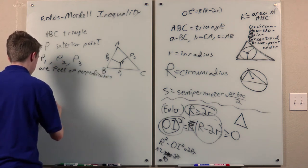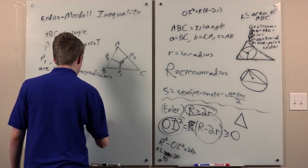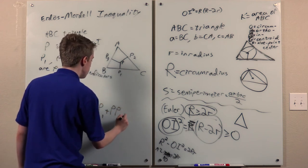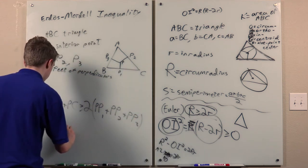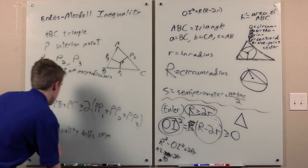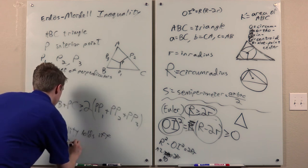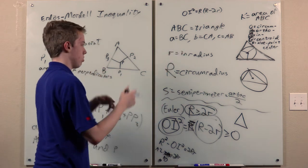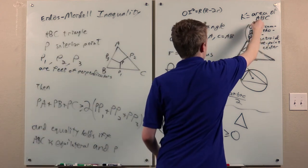Then, pa plus pb plus pc is greater than or equal to 2 times the quantity pp1 plus pp2 plus pp3. And equality holds if and only if abc is equilateral and p is its center. An equilateral triangle only has one center. All of these points turn into the same point if a, b, c is equilateral.